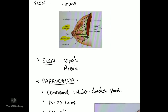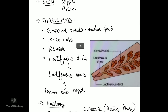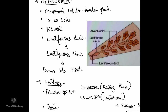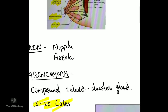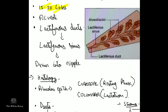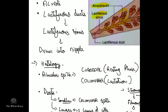The parenchyma of the breast is composed of compound tubular alveolar glands. The breast is divided into 15 to 20 lobes, and each lobe contains many alveoli. The alveoli are the site where milk is secreted. Milk drains from the alveoli into the lactiferous duct, then into the lactiferous sinus where it is stored, and finally when the baby sucks, it drains through the nipple into the baby's mouth.